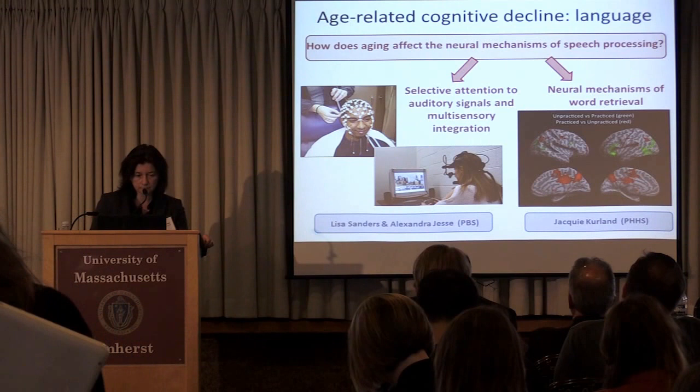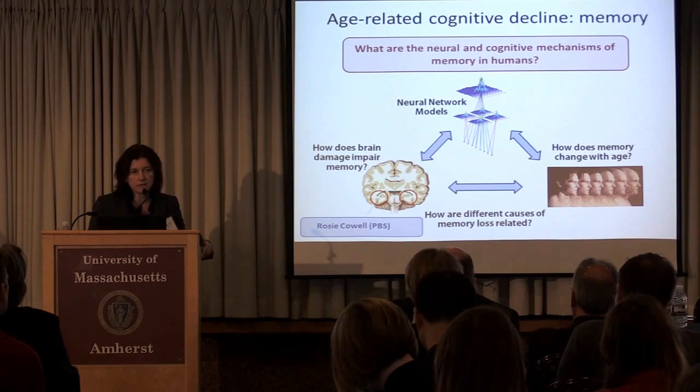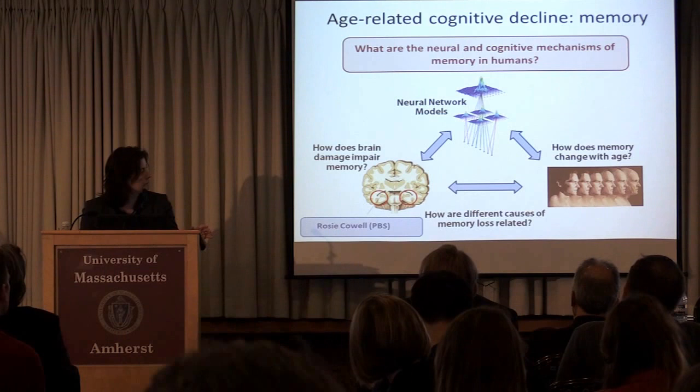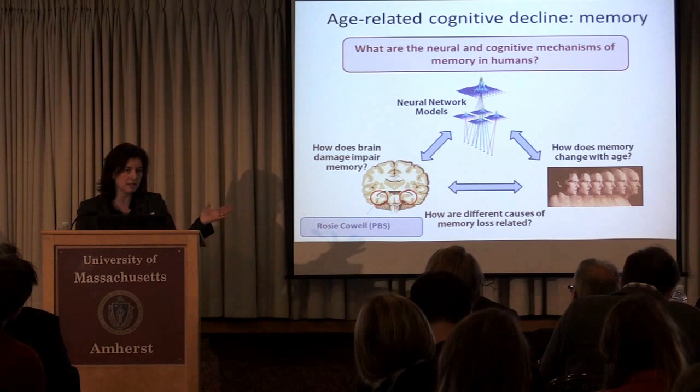Turning to memory — of course memory is one of the major complaints of older people. The lab of Rosie Carwell studies how memory changes with age and uses fMRI and neural network models to determine whether age-related changes are similar to memory deficits experienced by people with medial temporal damage.